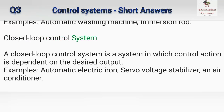Closed loop control system: a closed loop control system is a system in which the control action is dependent on the desired output. Examples: automatic electric iron, servo voltage stabilizer, and air conditioner.